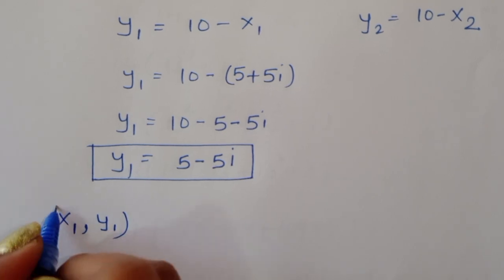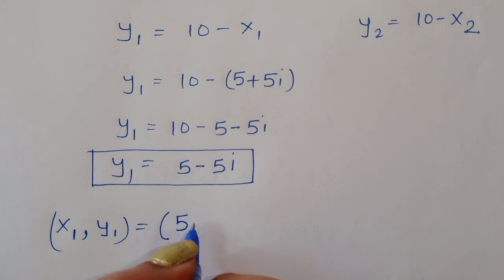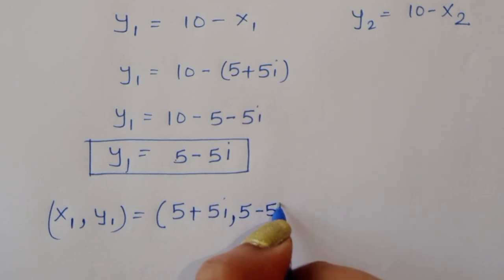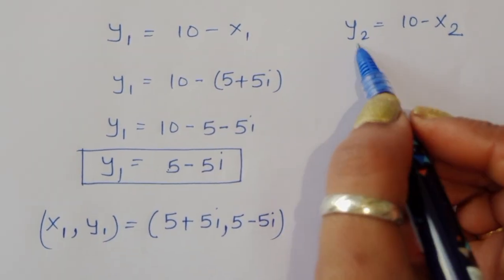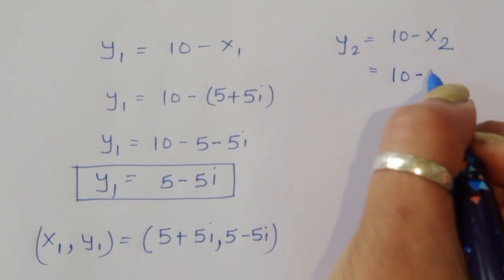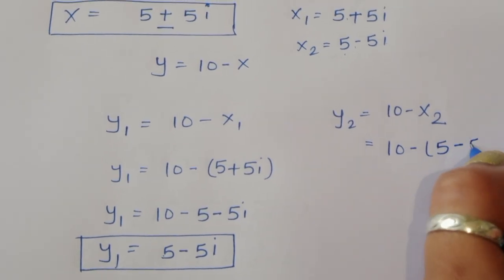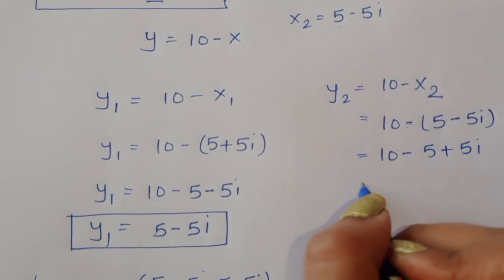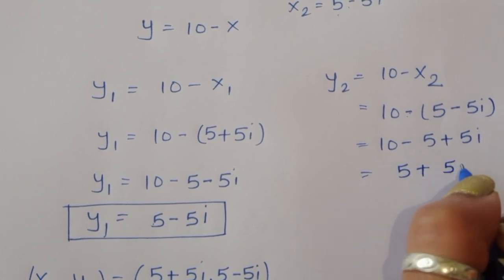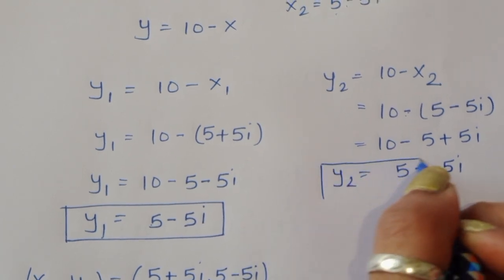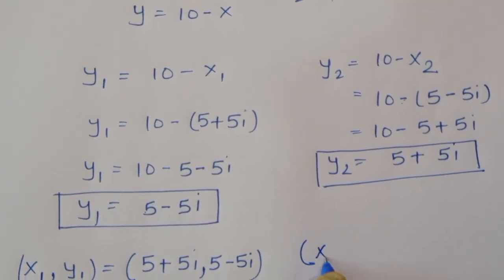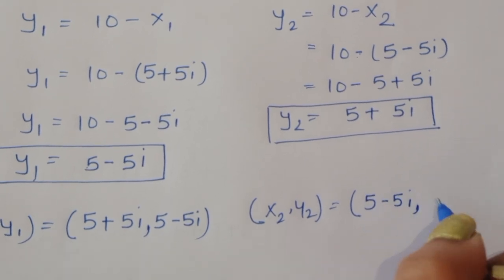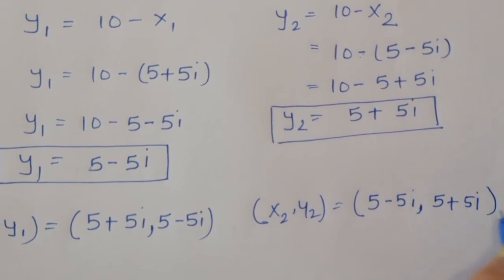So when x1 is 5 plus 5i, the value of y1 is 5 minus 5i. When x2 is 5 minus 5i, the value of y2 is 5 plus 5i. Let's verify whether these are correct.